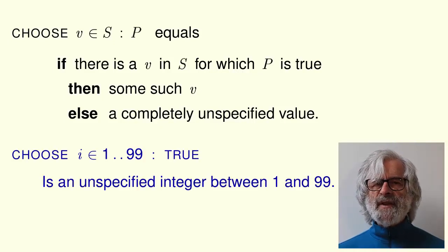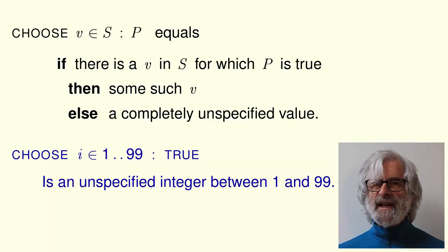For example, this expression equals an unspecified integer between 1 and 99. We don't know which one. It might equal 37 or it might not. The semantics of TLA+ don't say.